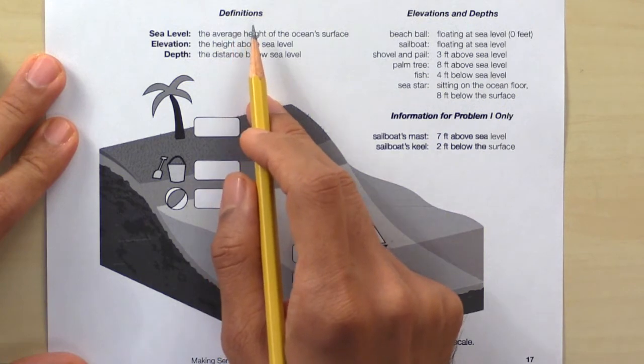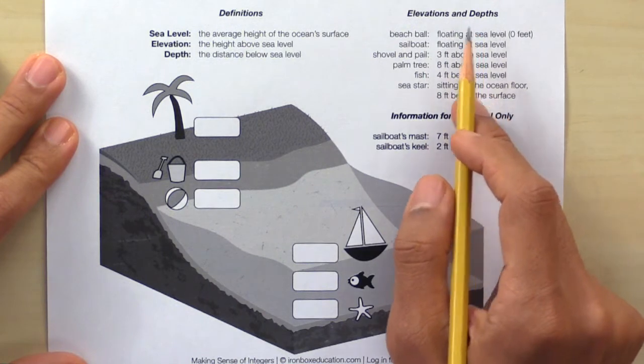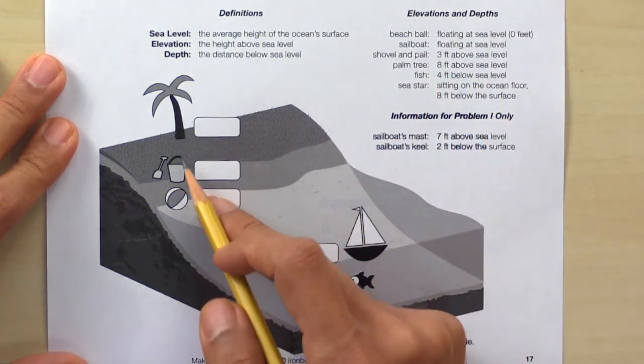Here we have the definitions of sea level, elevation, and depth. And these are the elevations and depths of each of the objects in the diagram.